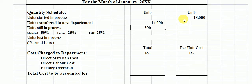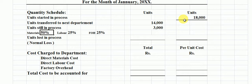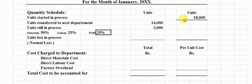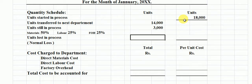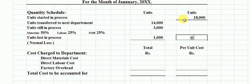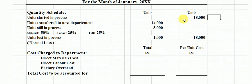3,000 units are still in process. The degree of completion is 50% as to material and 25% as to labor and factory overhead. The remaining 1,000 units are lost in processing. We add these three figures — the sum equals 18,000 units, which equalizes the total units started in process.